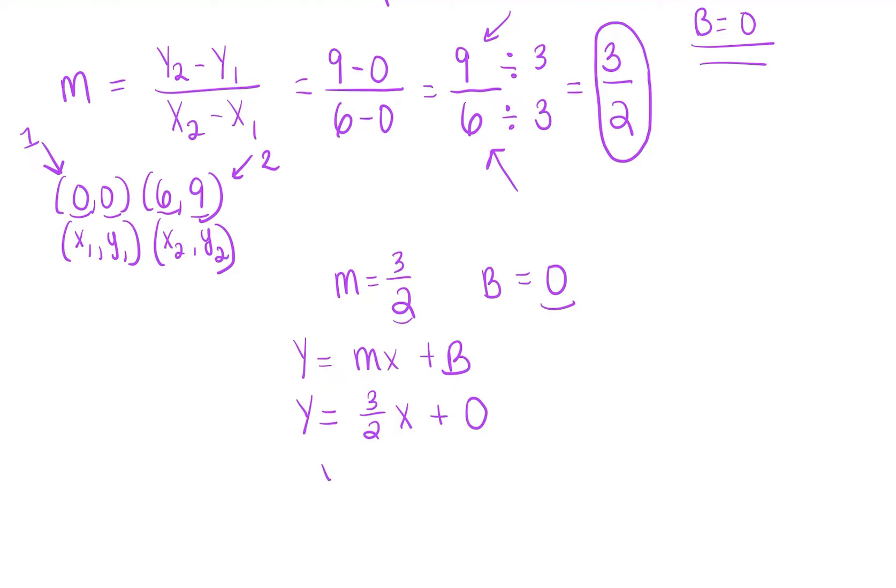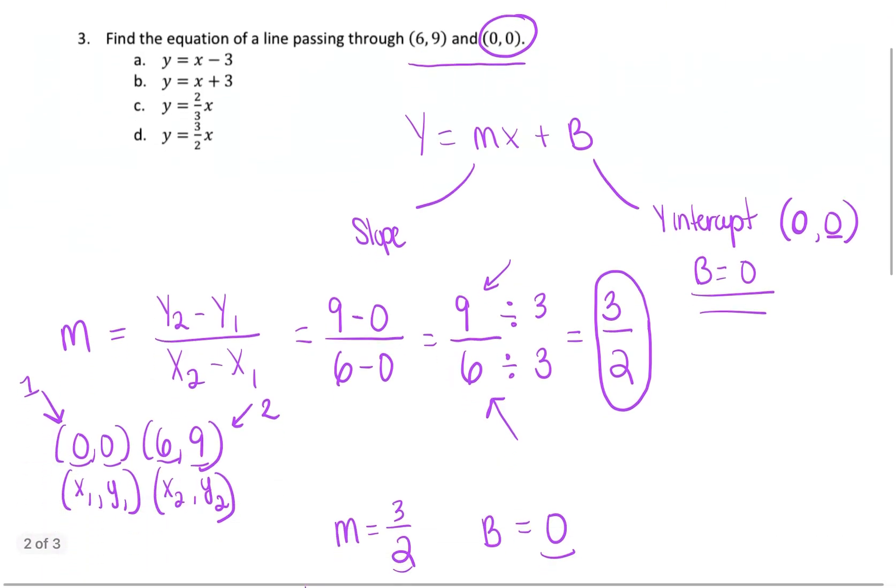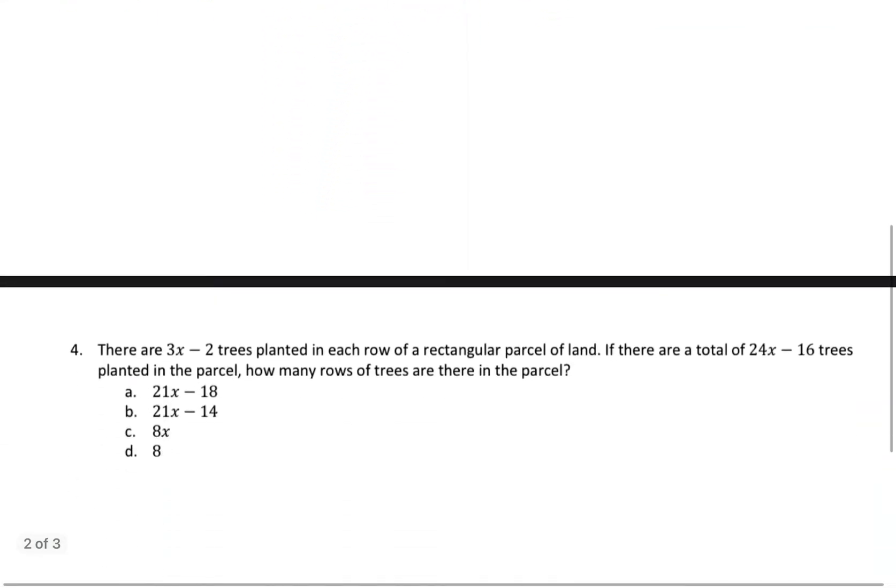So we're going to drop the 0. Y equals 3/2 x. So that is going to be our equation for our line. So we're going to go up to the problem and see. D, y equals 3/2 x. So that is our problem number 3.